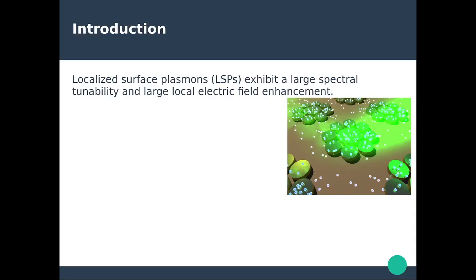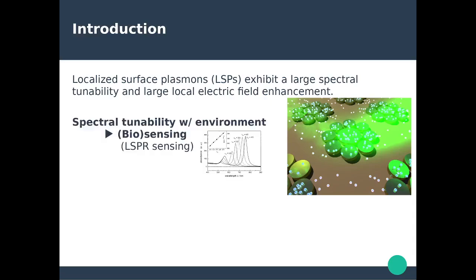Localized surface plasmon resonances exhibit a very large spectral tunability — something we've seen already in Chapter 9 — and they also exhibit a very large local electric field enhancement. Both of these properties are going to be used in different ways toward optical spectroscopies and sensing applications. The spectral tunability, for instance with respect to the direct environment, will be used for sensing applications and specifically in terms of biosensing. That's what we're going to call LSPR sensing.